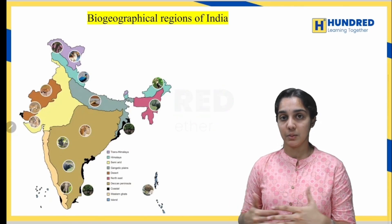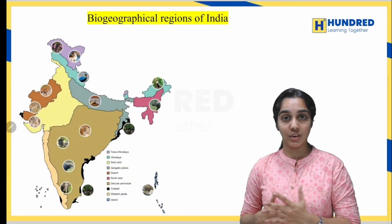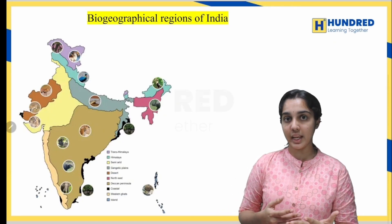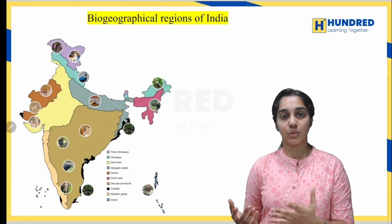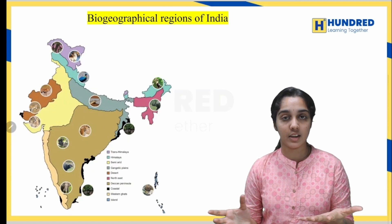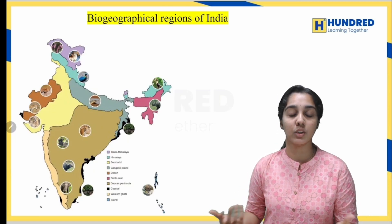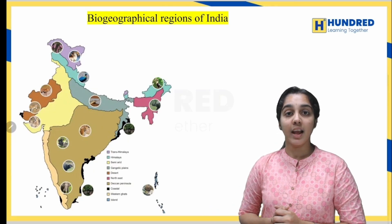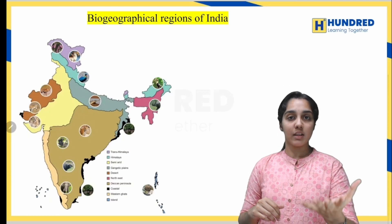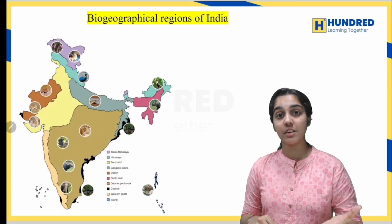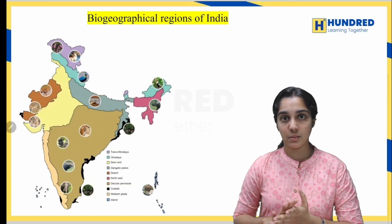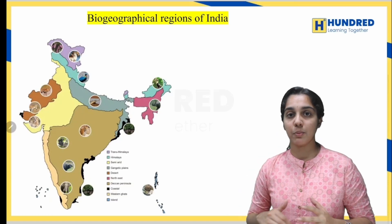For Red Data Book, it's a book-based question — two marks or three marks, like 'write about Red Data Book' or 'explain about Red Data Book.' One more question: who maintains the Red Data Book, which organization maintains it — these questions can be expected.